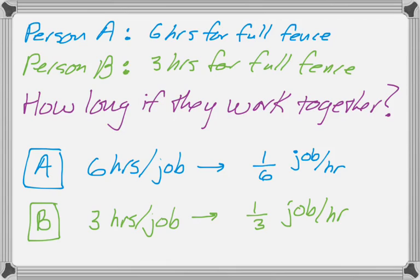What's important about this is that now in the numerator of our rates, we have job. And the objective here is to finish one job. So we want the job to end up in the numerator.